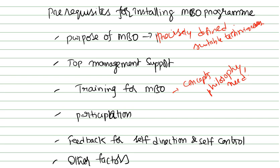Next is participation. Everyone must be committed — every individual, every group, every department must be committed and accept the MBO program. Everyone's participation is required, whether it is active participation or passive participation. Active participation is emphasized more than passive participation.